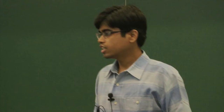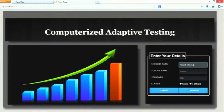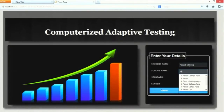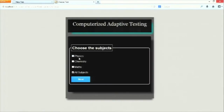The computerized adaptive testing web portal first checks whether the client has a particular test session already. If he wants to resume, he can resume; otherwise, he can start a new session. When he starts a new session, he is shown a front-end where he can enter details validated by JavaScript. When he presses the continue button, he is directed to the test customization page, where he can select which topics he wants in the test.